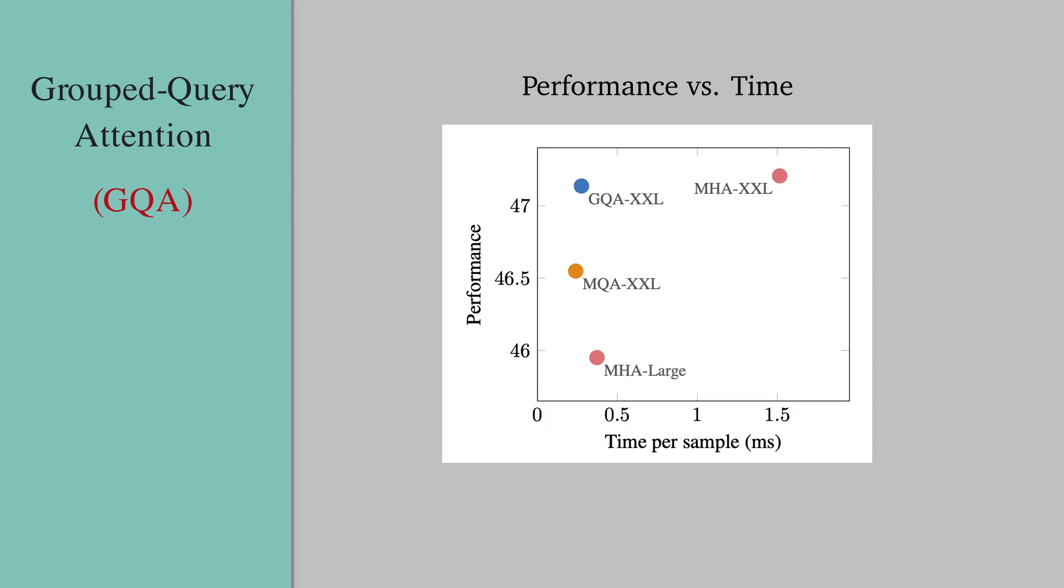Now let's compare the performance of these models. This figure shows the performance versus time for all these methods. While MHA has the best performance, it's also the slowest method. And MQA is the fastest, but GQA is able to achieve similar speedup as MQA while its performance is in the same level as MHA.